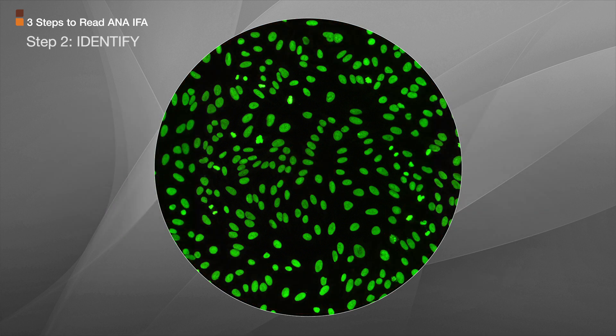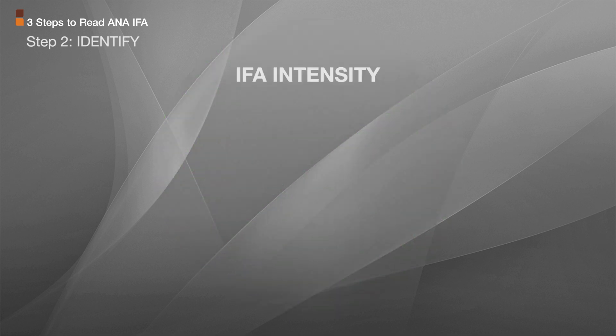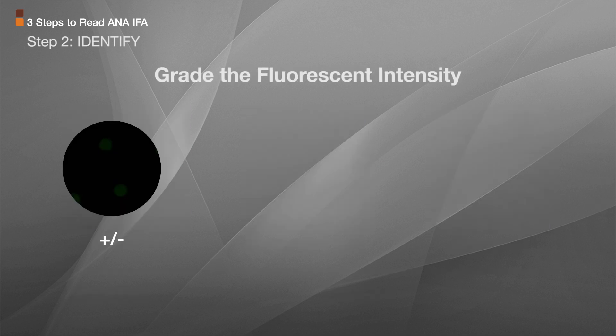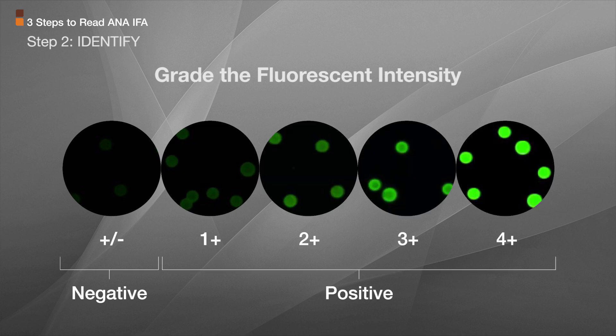The screening magnification for HEp-2 substrate should be determined in each laboratory based on the light source and optics of the microscope. 200 times total magnification is recommended. A positive is when you read a 1-plus fluorescence in the nucleus of your interphase or resting cell — this is the lowest specific fluorescence that enables the staining of the interphase nucleus to be clearly differentiated from the background fluorescence. Once you determine your ANA-IFA is positive, you need to grade the fluorescent intensity using a reactivity scale from 1-plus to 4-plus.